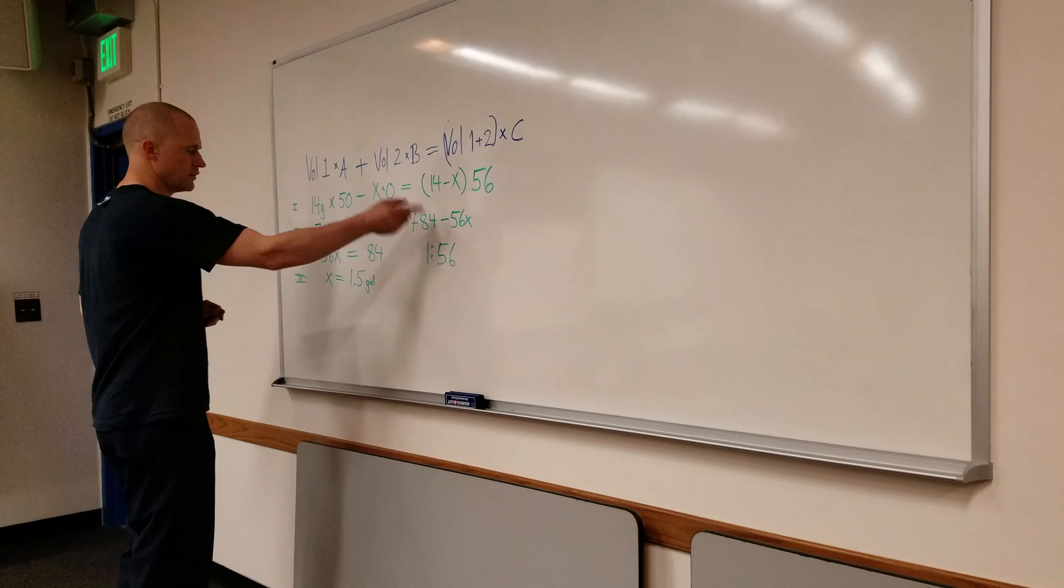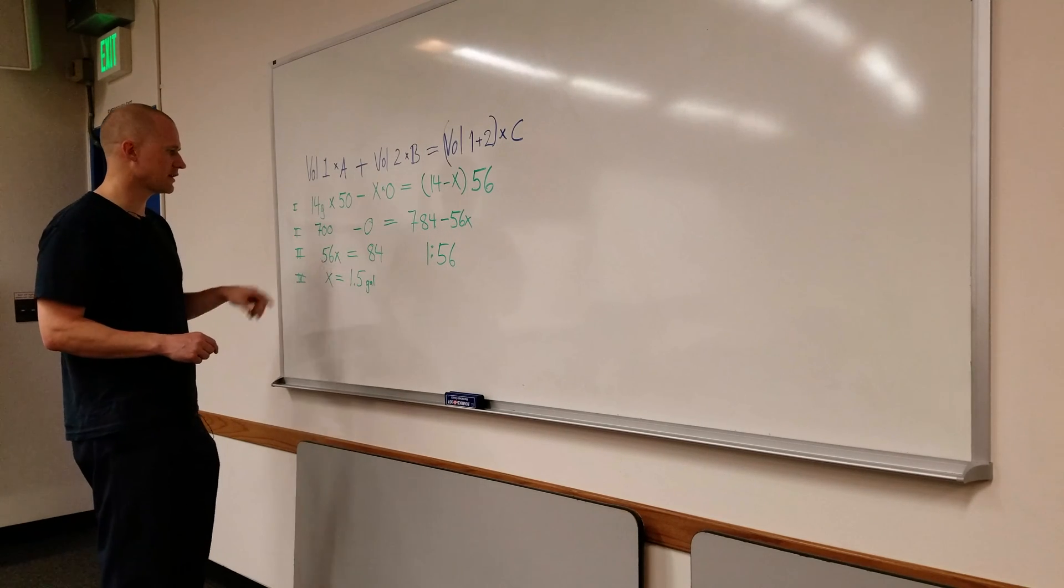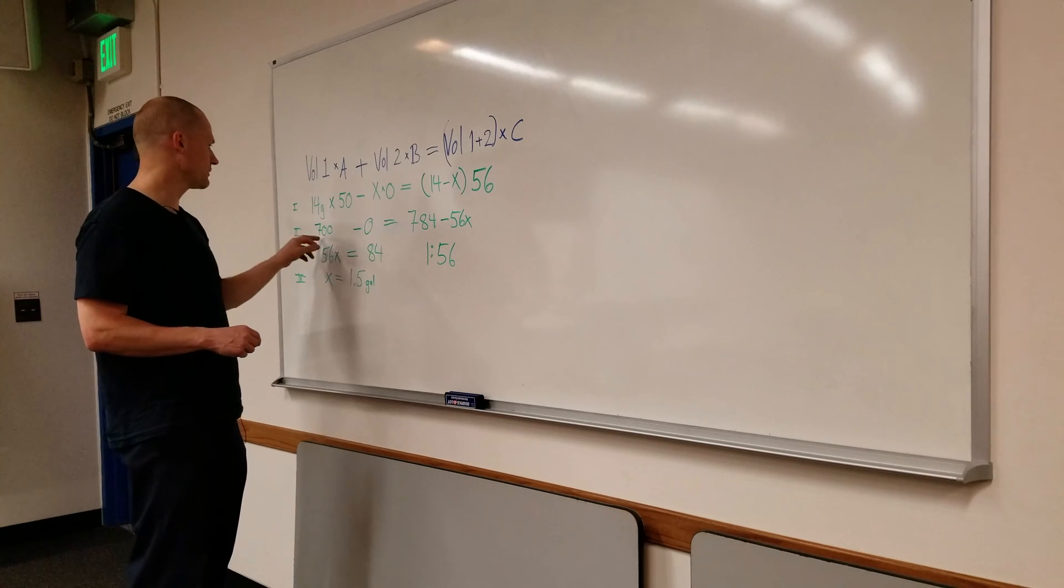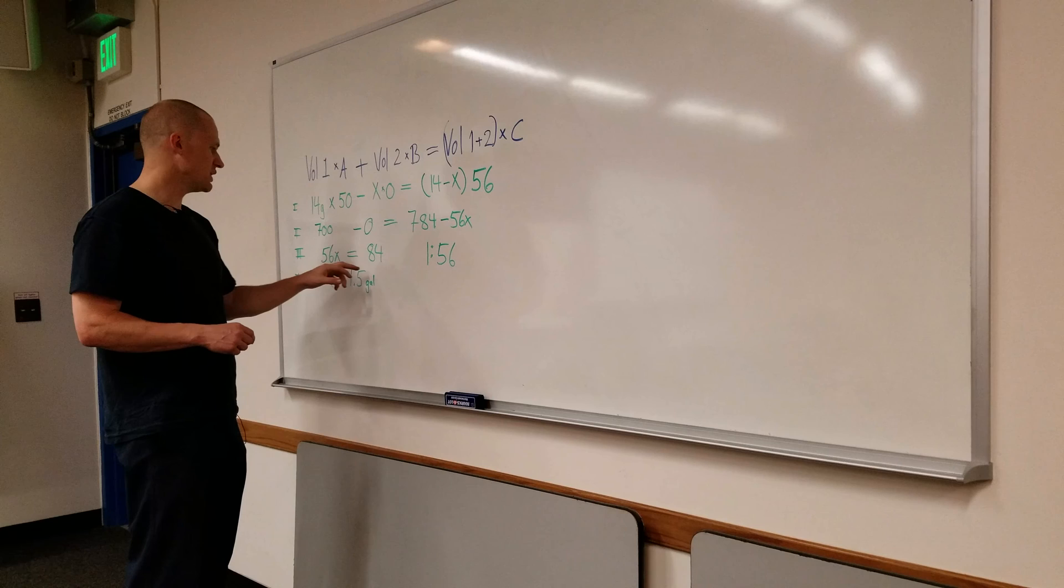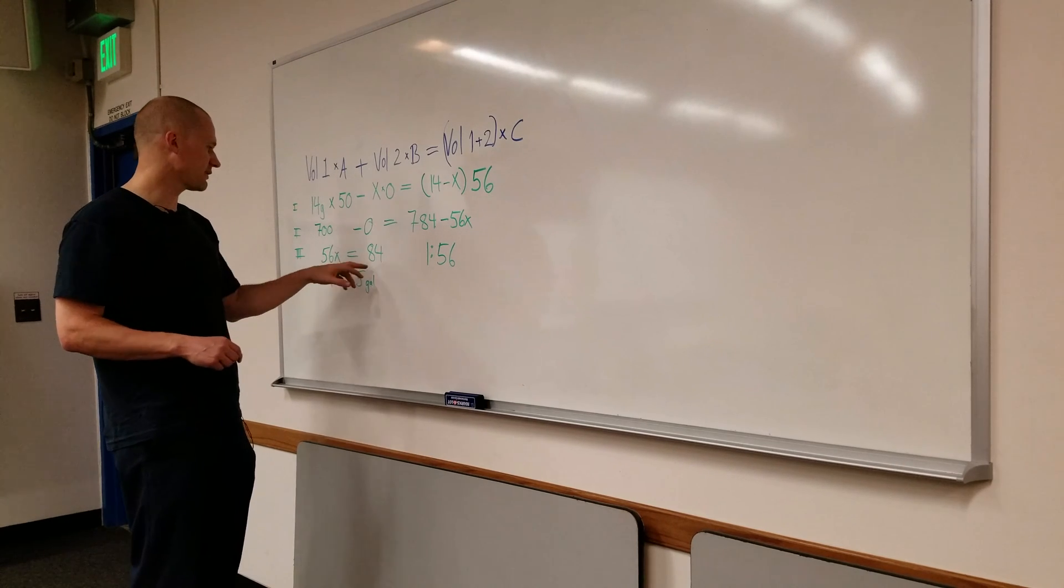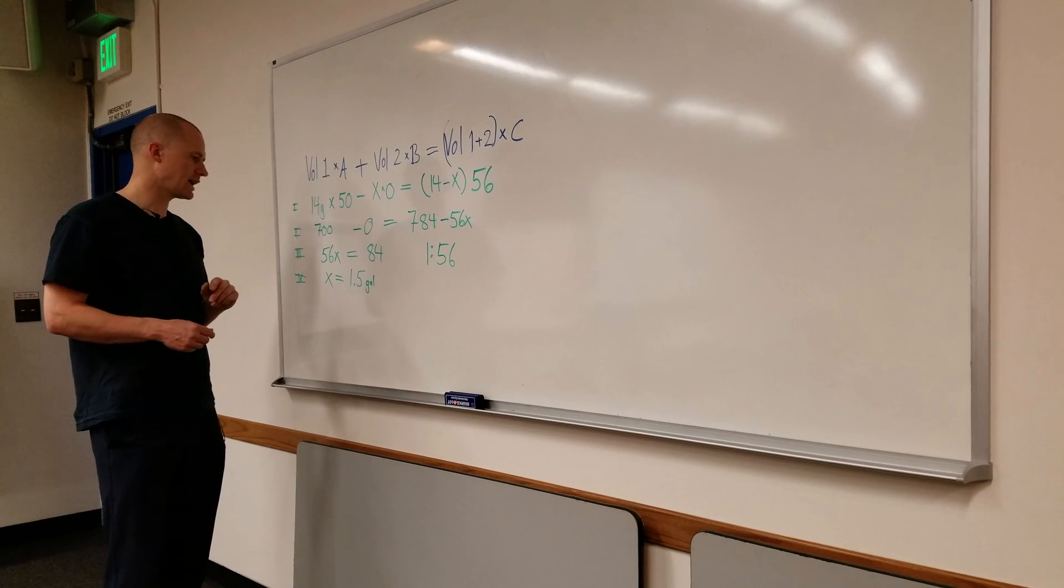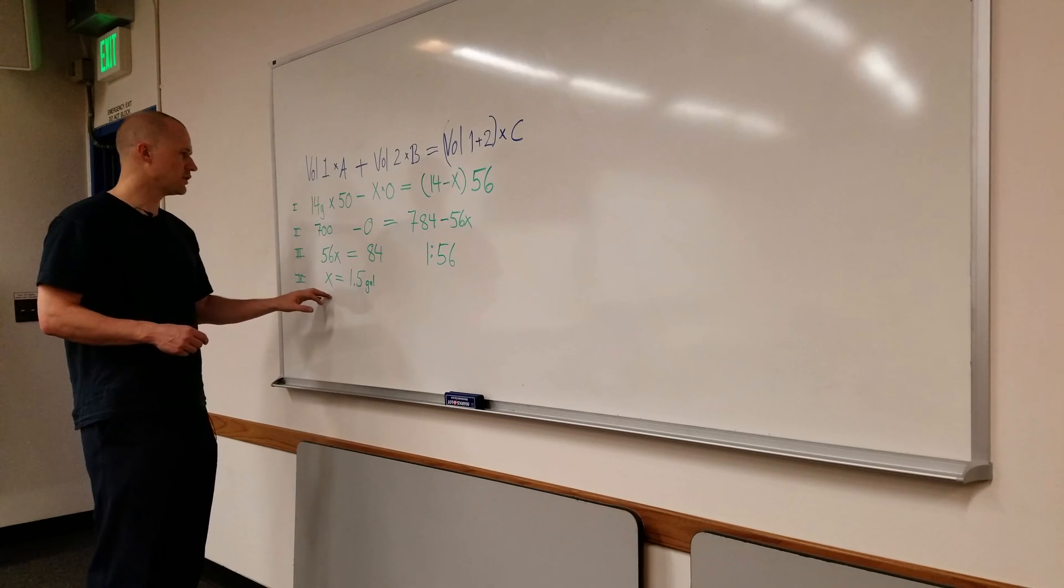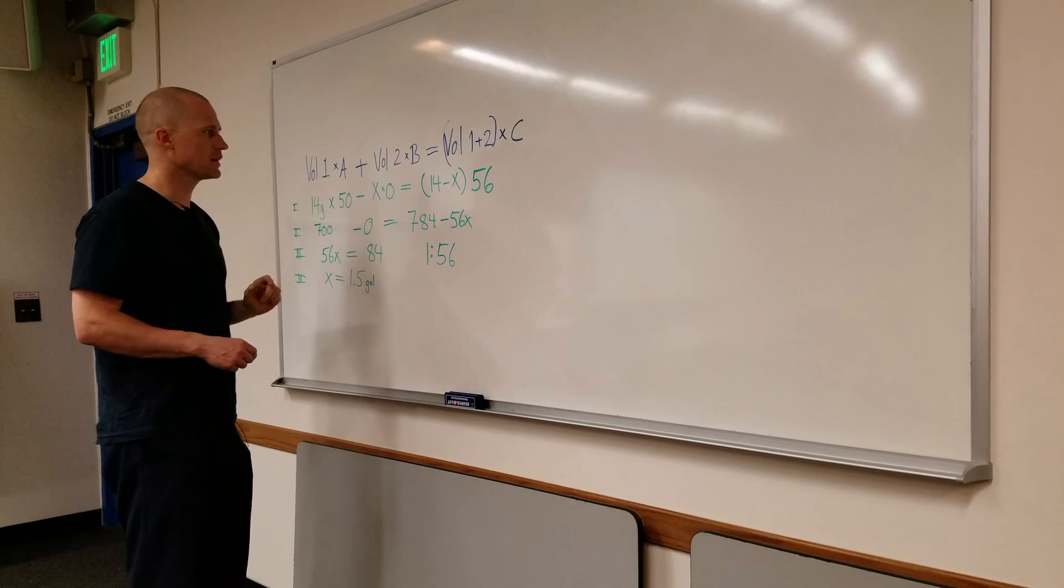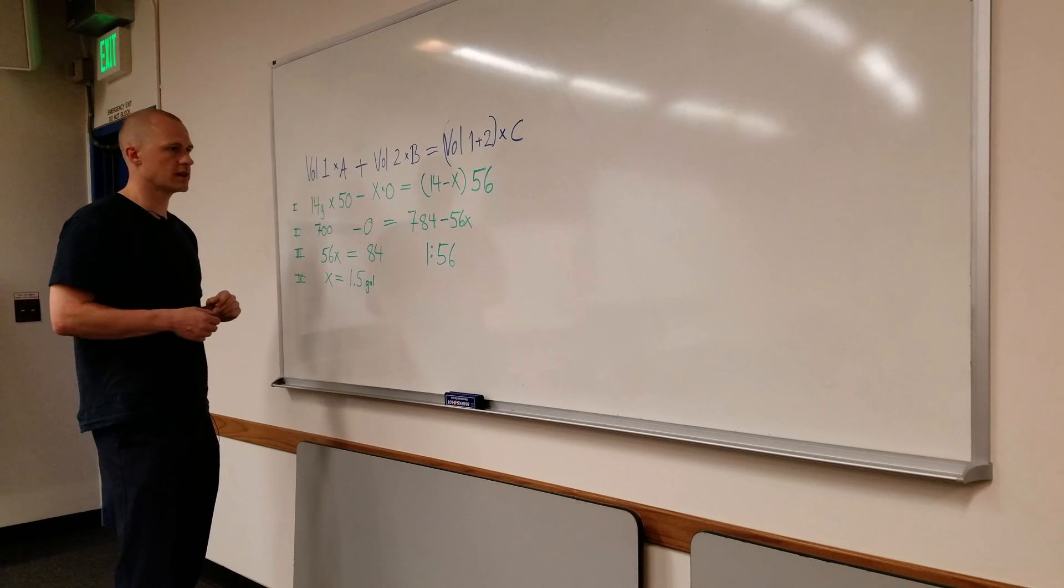From here, move x across, you get over to the positive x again, so now you have 56x equals the 784 minus 700, so equals 84. Now we want to solve for x, 56x is 84, so divided by 56, x equals 1.5 gallons. And since we know our x was the unknown volume that we had to boil off, that means we have to boil off 1.5 gallons to get our total sugar content up to 56.